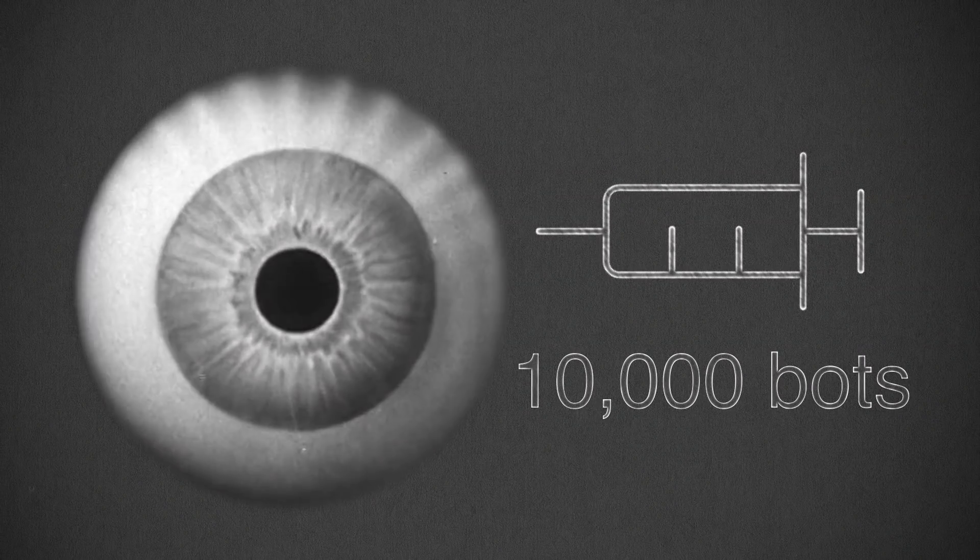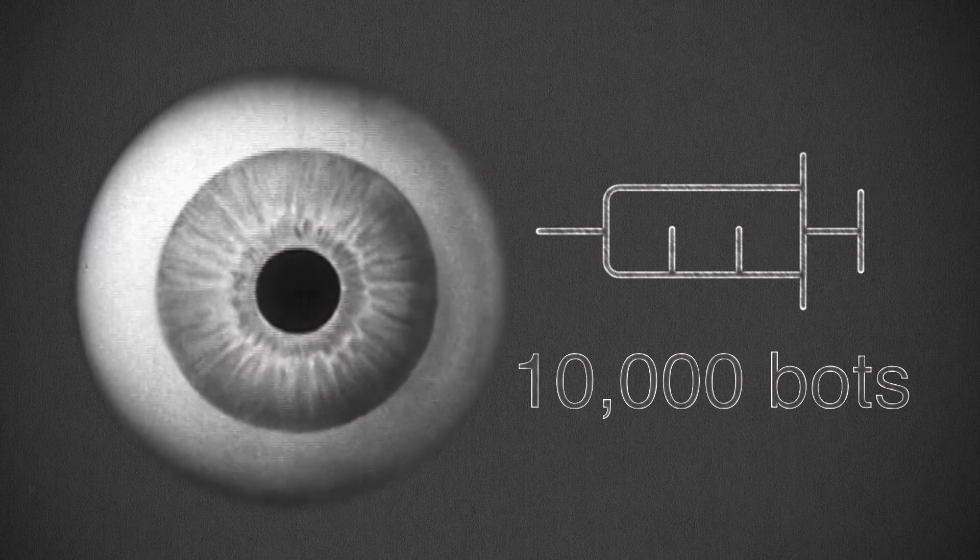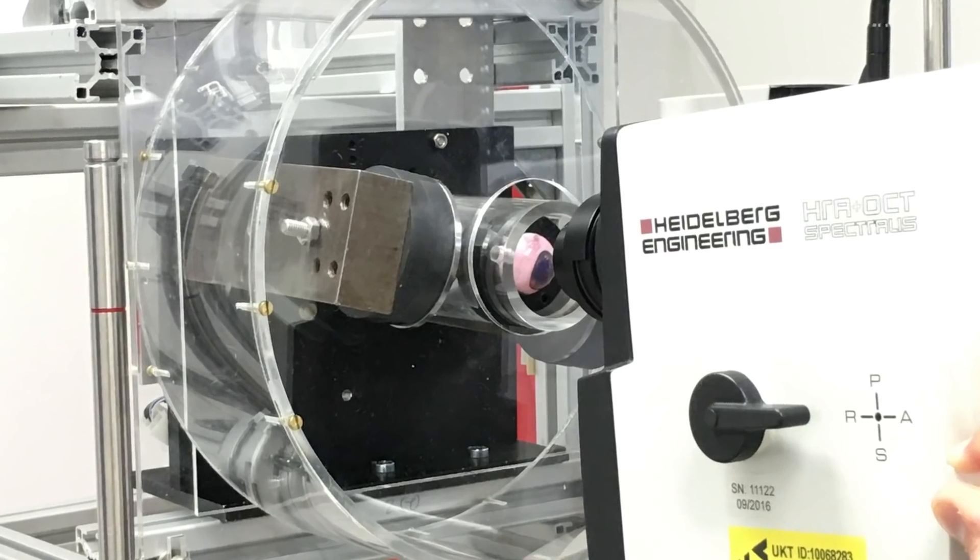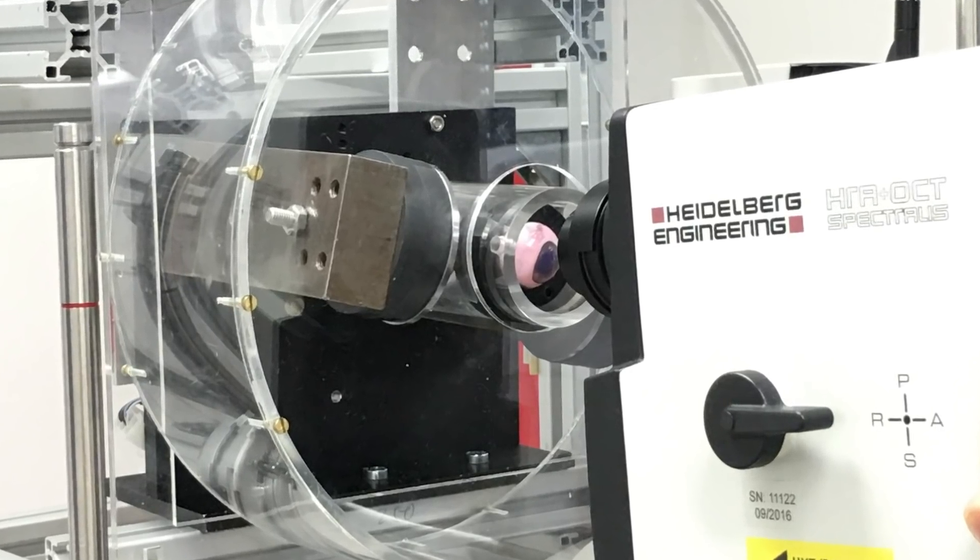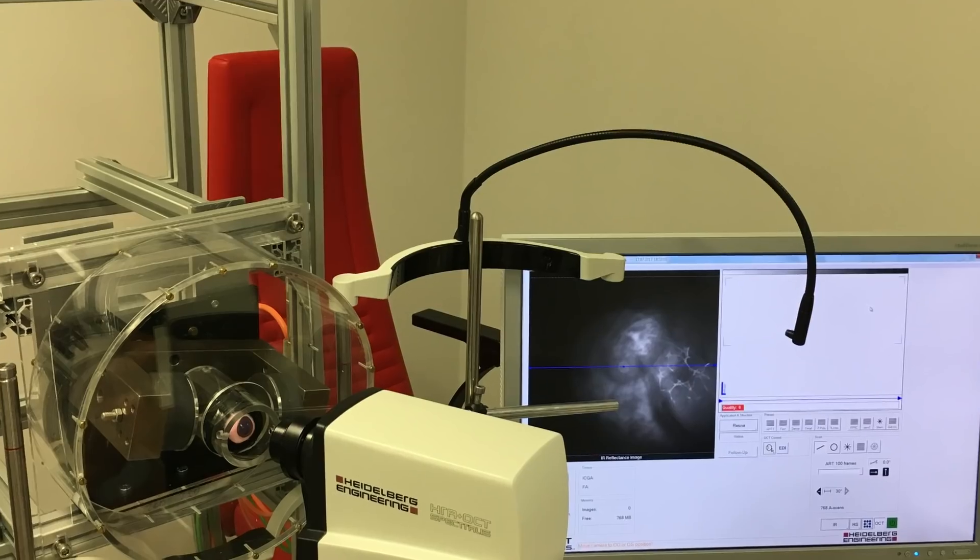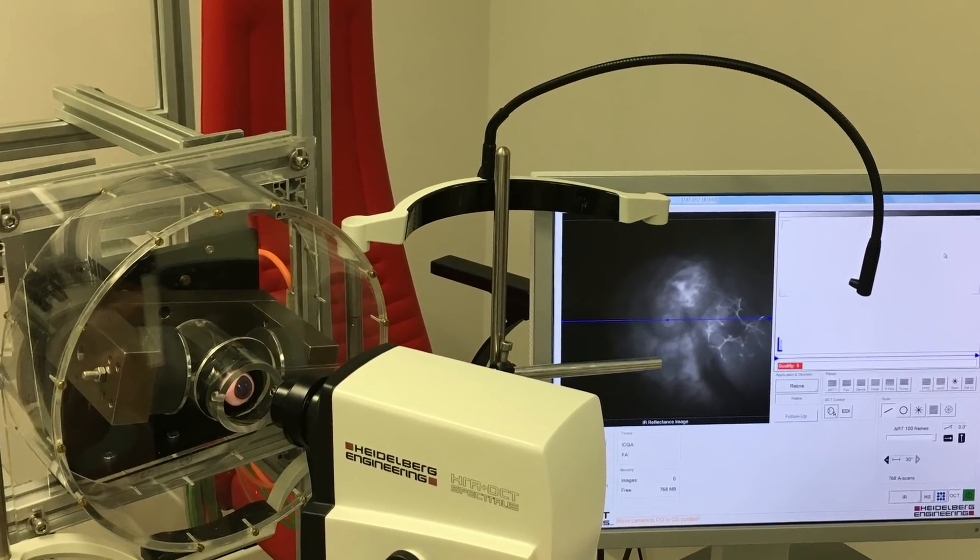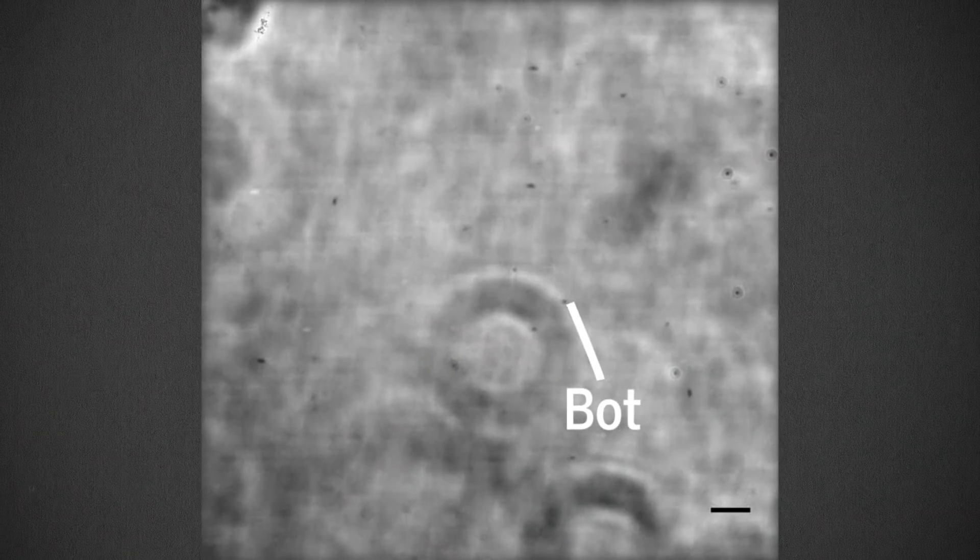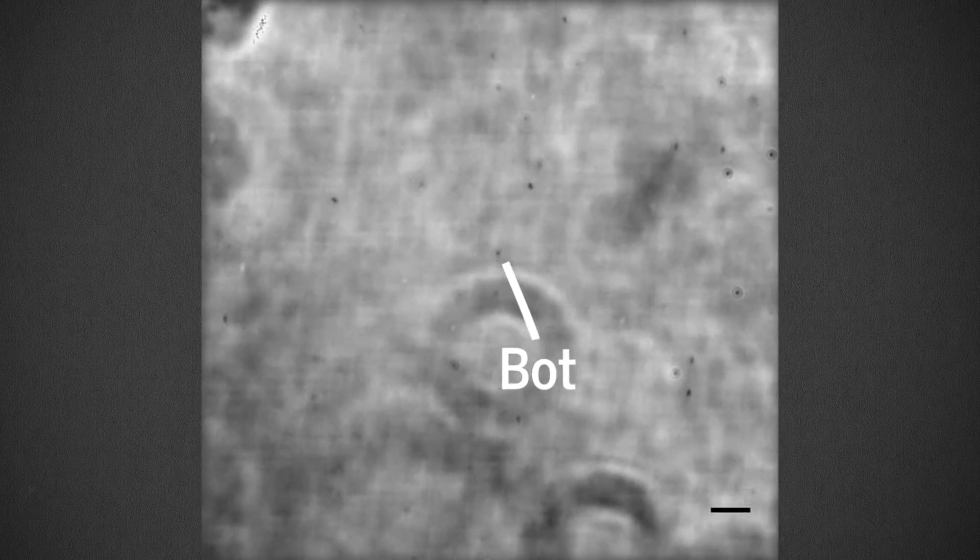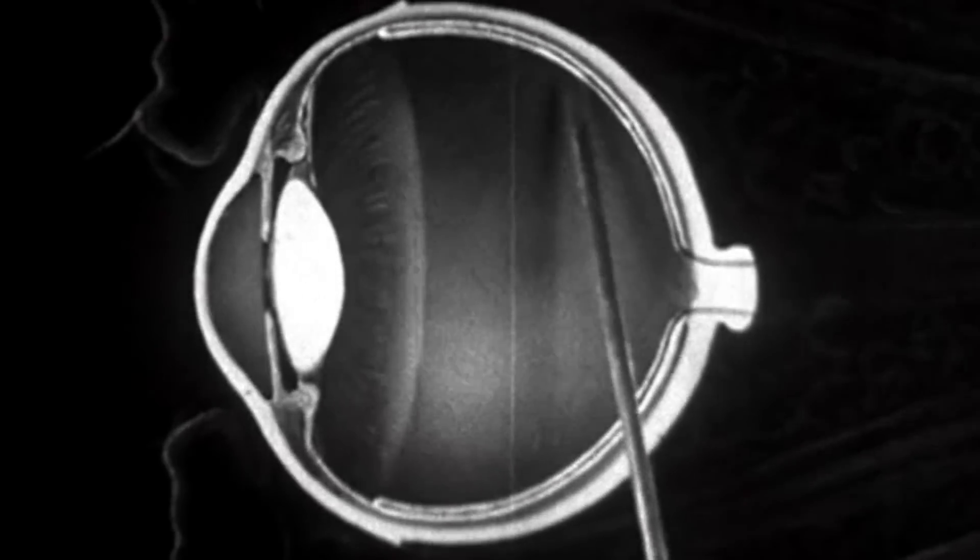The scientists injected a solution containing around 10,000 of the spiral bots into eyes collected from pigs and put the eyes in a magnetic field. They used imaging techniques and dissection to see if the bots had been able to pass through the eyeball's jelly all the way to the back, where the light-sensing retina lives.